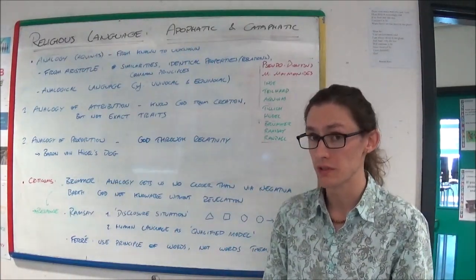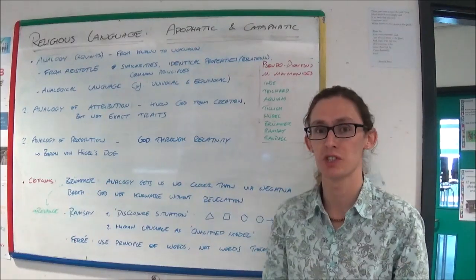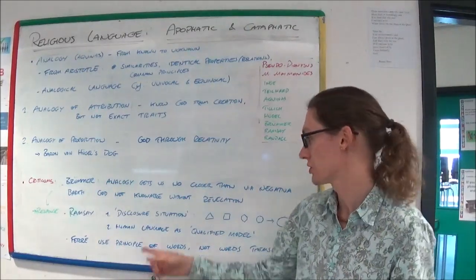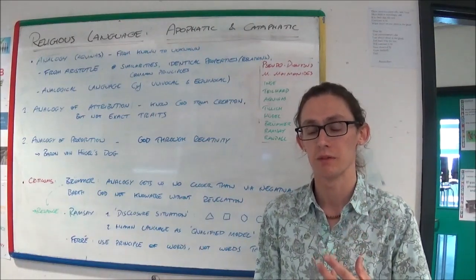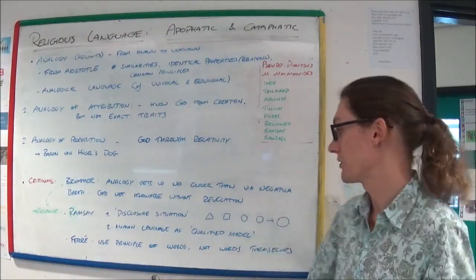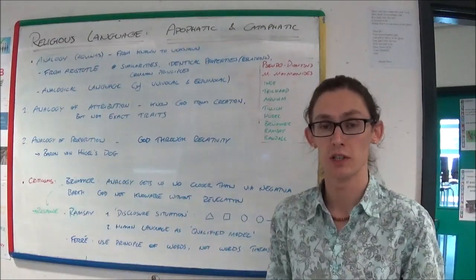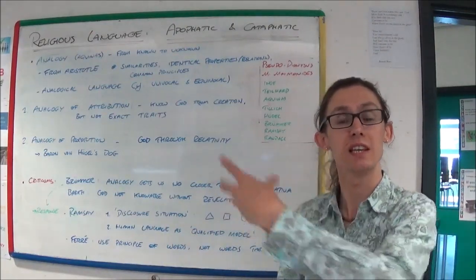Ian Ramsey responded to this by suggesting, no, you can know things from analogy. And he gave two examples. He gave the disclosure situation, suggesting how analogies can lead you to the real thing.